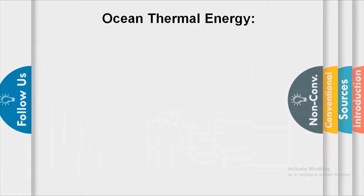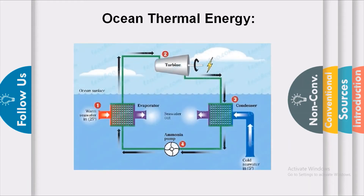Let us discuss another source of energy: ocean thermal energy. Water at the surface of the sea is hot, whereas water in the deeper section is cold. This difference in temperature is used to transform energy in an ocean thermal energy plant, also called OTEC — Ocean Thermal Energy Conversion. In the OTEC plant, we use water at the surface and water at a depth of two kilometers, so that the temperature difference is at least 20 degrees Celsius.